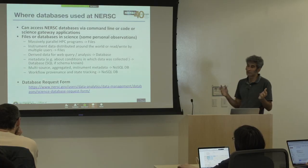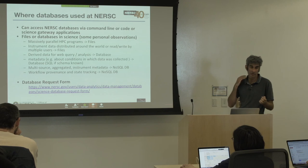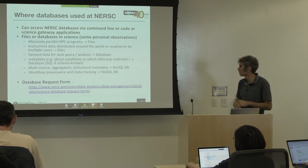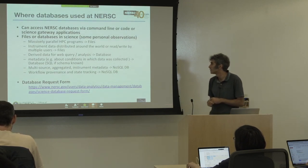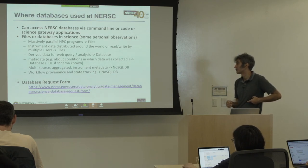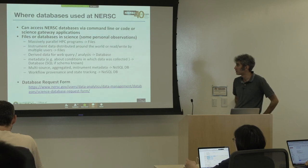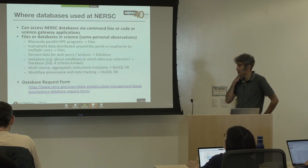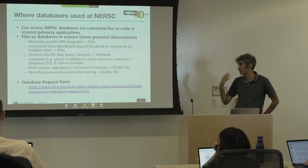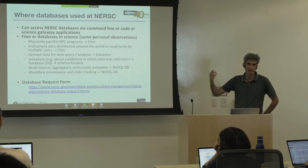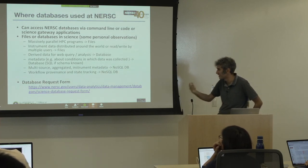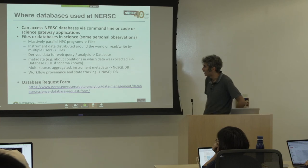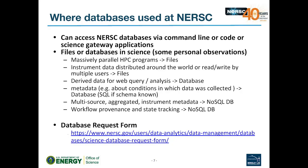In other cases, you're aggregating different data streams and might want to change the schema as you go - a NoSQL database might be better. We see Mongo used extensively in workflows at NERSC for provenance and state tracking. If you want a database, please contact us via the request form.